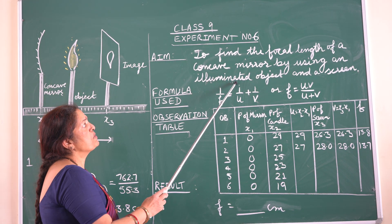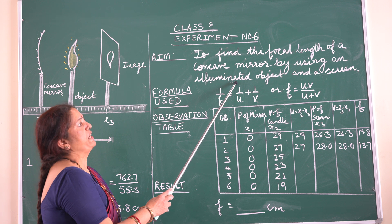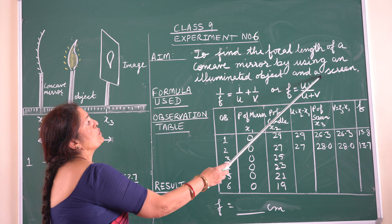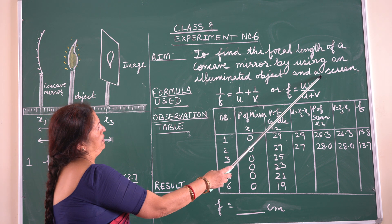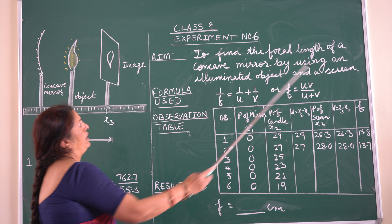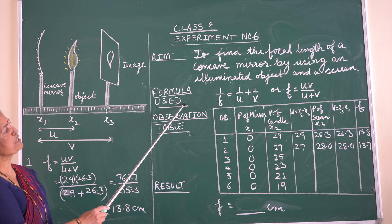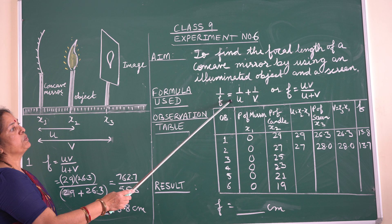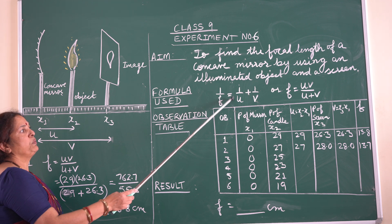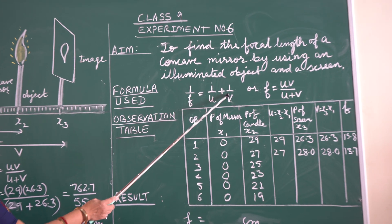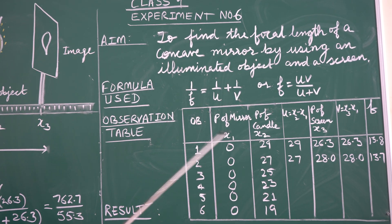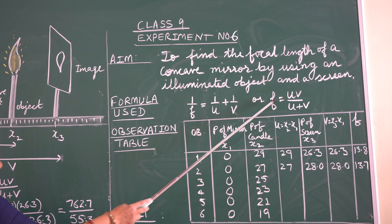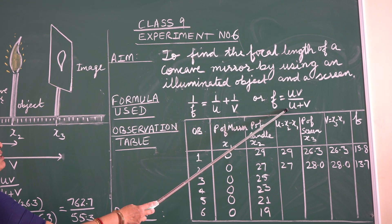The illuminated object will be taken as a glowing candle and a screen will be used as a plain sheet of paper. The formula used for the experiment will be 1/f = 1/u + 1/v, or if modified, f = uv / (u + v).